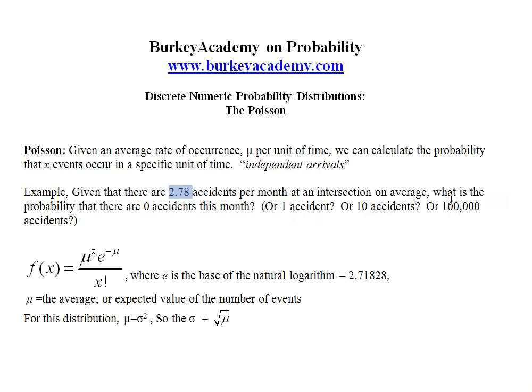Now one of the properties of the Poisson distribution is that we can calculate the probability for any number x. We can put in one, zero, a hundred, a thousand, a million, or a billion, as long as x is an integer.